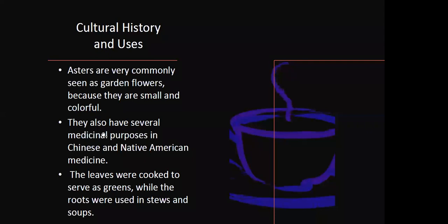Asters themselves are very common and often seen as garden flowers. They're small and colorful, which makes them very attractive to a lot of people. They have been around for a long time, especially in Native American and Chinese medicine. Their leaves have been cooked to serve as greens. The roots have been used in stews and soups as well.